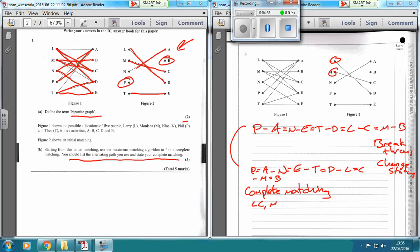M we can see is connected to B, N is connected to E, P is connected to A, and T is connected to D.